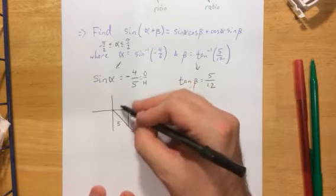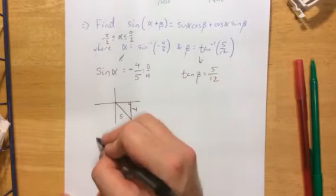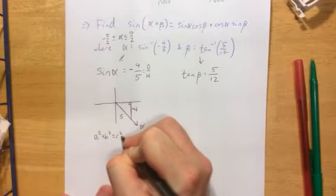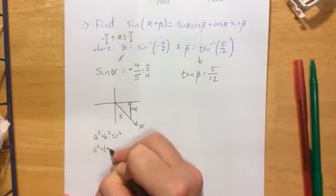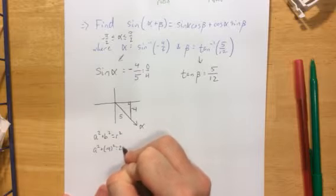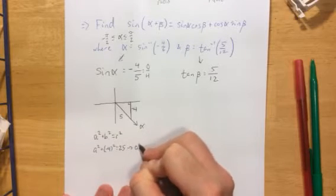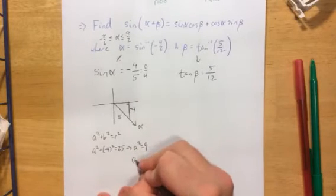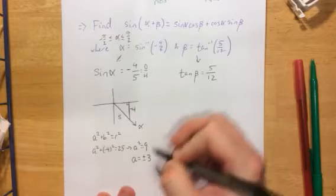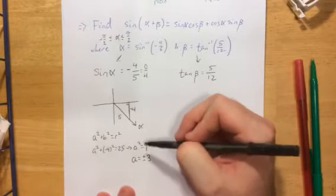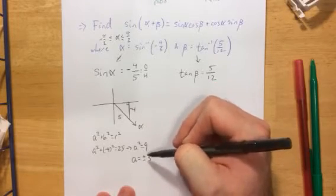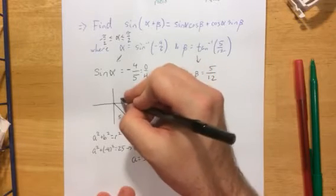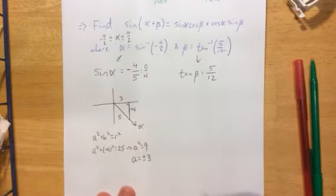Now this allows us to solve for our other side. Some of you probably recognize this triangle. We'll say a squared plus b squared is equal to r squared. So a squared plus negative 4 squared is equal to 25. This tells us that a squared is equal to 9. Now this would imply that a has to be equal to plus or minus 3. Now you'll be using what quadrant we're in to determine whether that side should be positive or negative. From the perspective of the origin, we move to the right to get our x coordinate, so that would have to be a positive value.